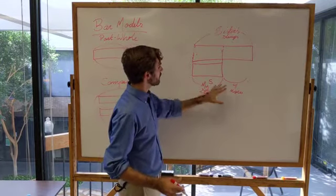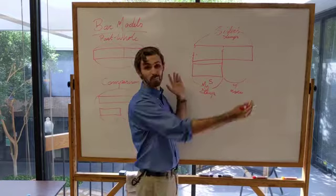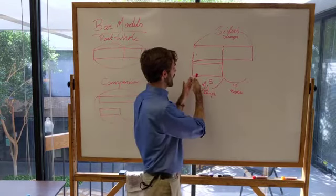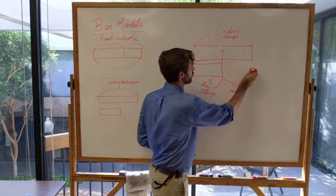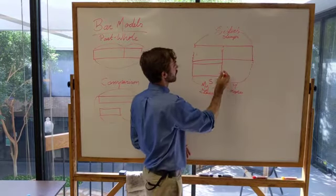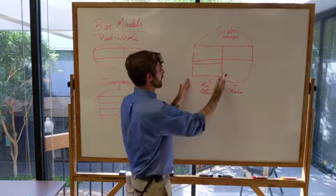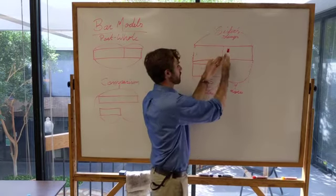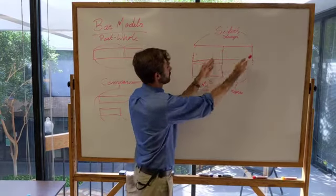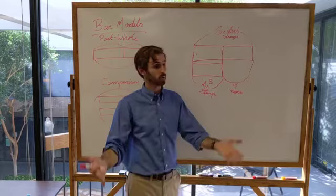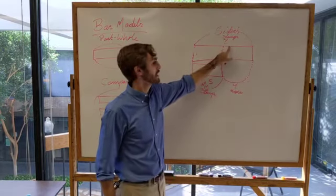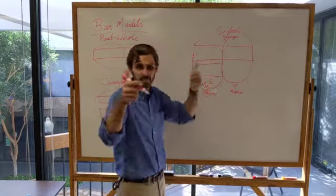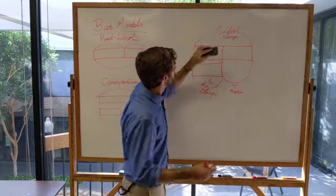And once you have this all laid out, it becomes pretty clear, oh, okay, well, to find out how many stamps my sister has, then I add up the number that I have plus this four more. Because there aren't any parts of her rectangle of stamps that is not either the same as the part that I have or part of this four more. This is five plus four. Great. Five stamps plus four stamps. We've gone from I don't know how many stamps she has, to saying, oh, well, five plus four, that's nine stamps. Great. So that's handy.